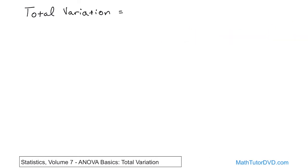It's basically equal to the sum of squares of errors that we calculated in the last section, plus the sum of squares among treatments that we calculated a few lessons ago. So you see, total variation is nothing more than the sum of these two things that we've been learning about. So this guy is the sum of squares of errors, and this is the sum of squares among treatments.